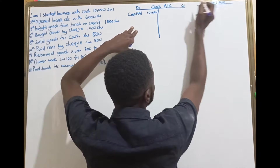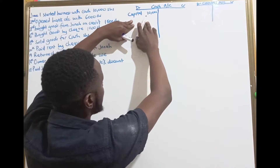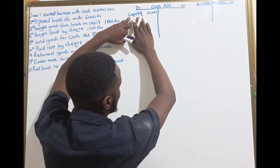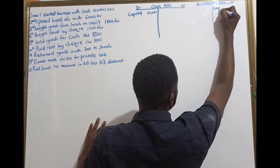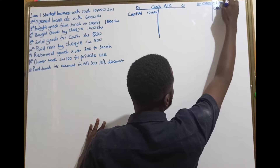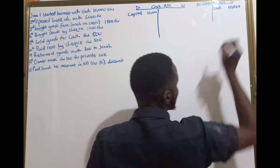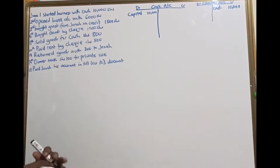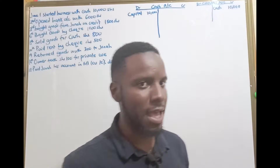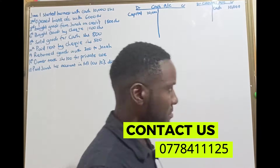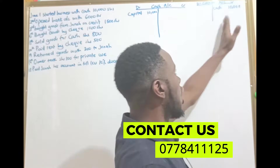This is our credit side. If we have debited here, remember we received cash in the form of capital. Now the capital account will be credited — that means we are giving out capital in the form of cash of 10,000 shillings. That is how our first transaction works. Every transaction has a double entry principle — whatever you enter on the debit side must have a corresponding entry on the credit side.